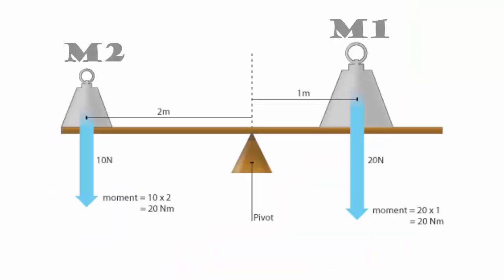For example, in this figure, we have two masses. M1 is greater than M2, and both masses are balanced over a single pivot point. How they are balanced? Actually, M1 is at a distance of 1 meter from the pivot point, so the moment it is producing is 20 into 1, which is 20 Nm. On the other hand, 20 Nm is produced with less mass by increasing its distance from the pivot point.